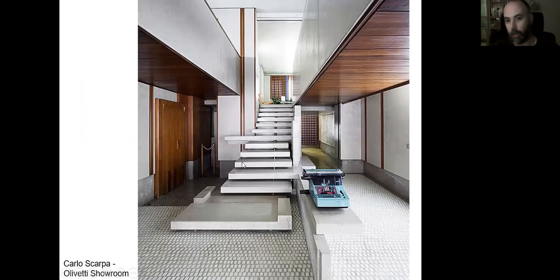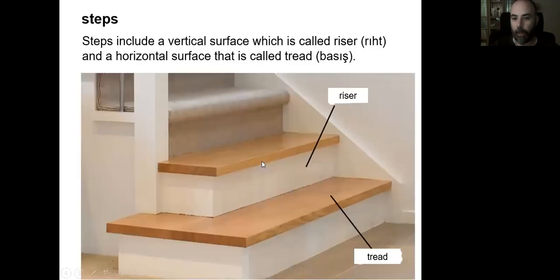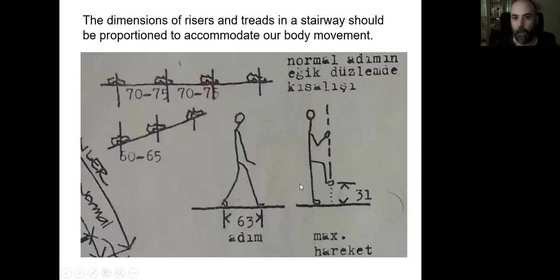It's the creation of Carlos Scarpa, the Olivetti showroom. When we look at the steps, we see that the steps include two surfaces: the vertical surface which we call riser, and the horizontal surface which we step with our foot, and it's called the tread. The dimensions of risers and treads in a stairway should be proportional because it affects how we move. If the dimensions are not correct, it will be hard for us to move in the stairs. It should be compatible with our body movement, and these are the important things that we need to consider.